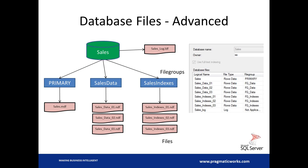Another example of multiple file groups is archive data — you put that in an archive file group, and at a point in time it could become read-only. You can make that file group read-only and exclude it from maintenance and from backups. A lot of architecture decisions go into scaling out your database design, and when it comes to being able to restore and meet your RPOs and RTOs, that all starts with the architecture of the database itself.